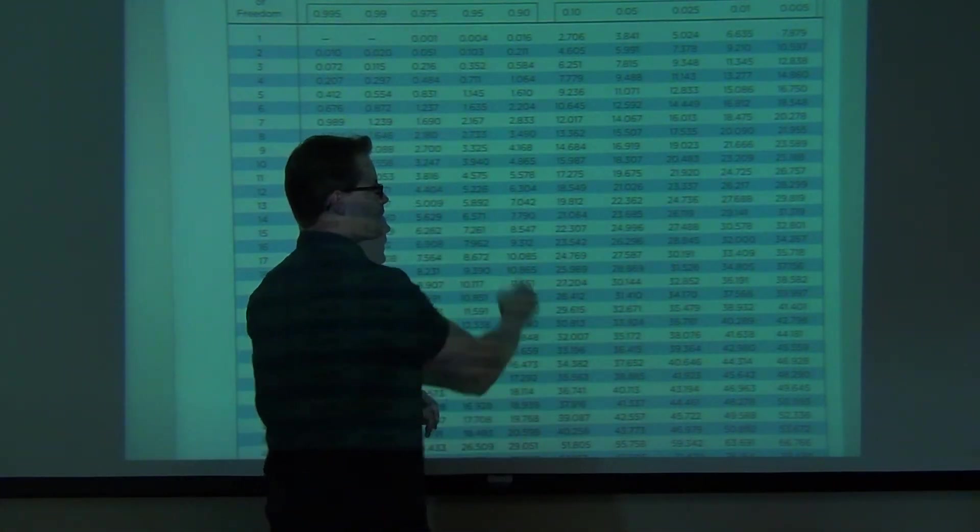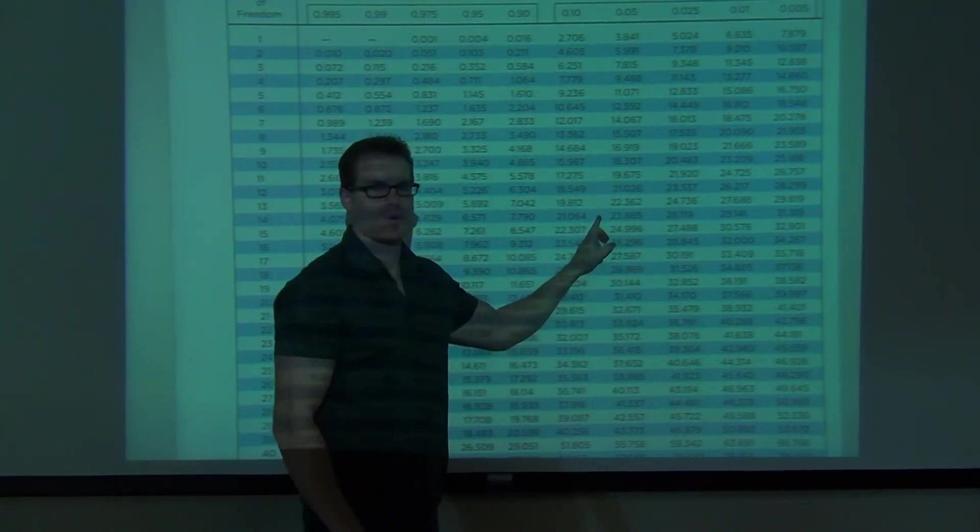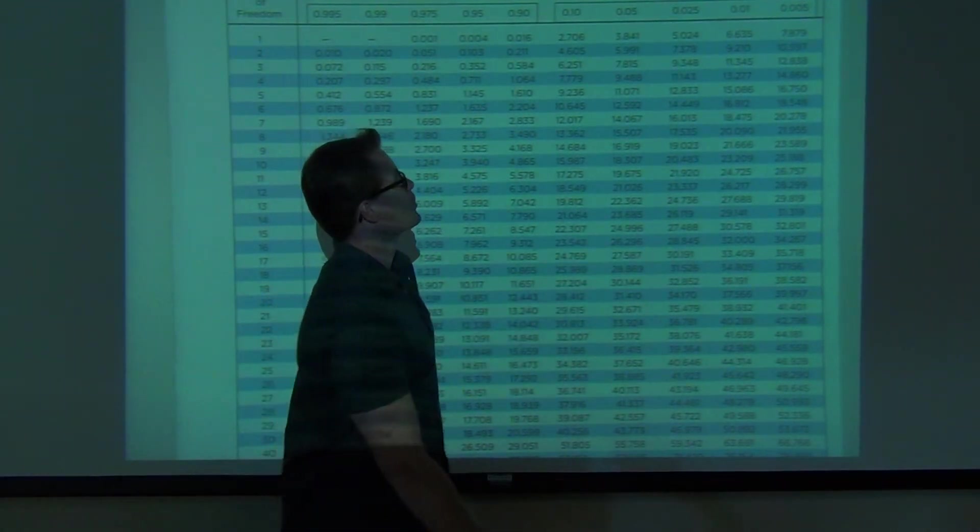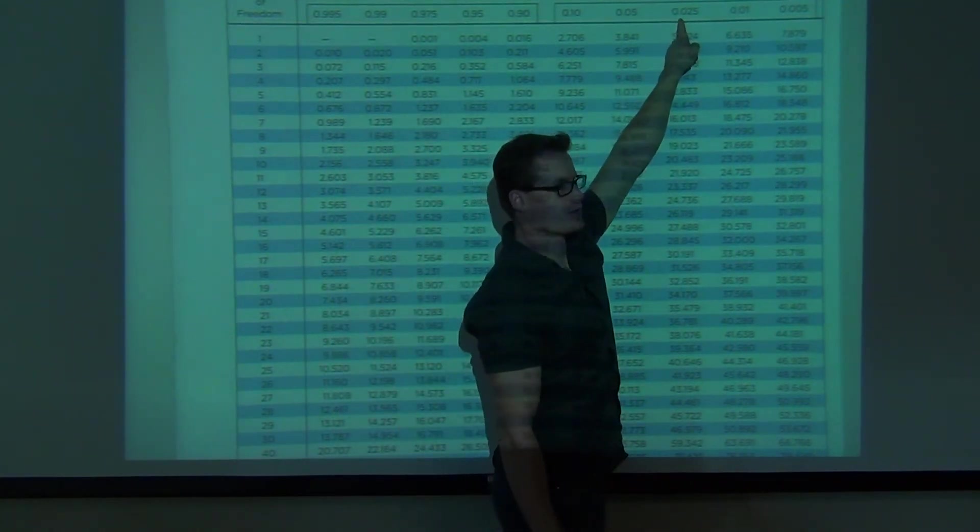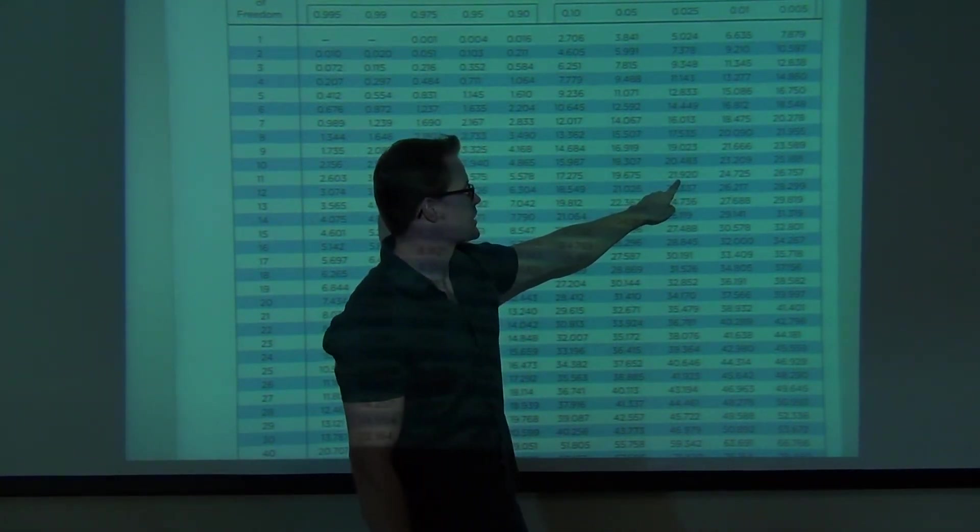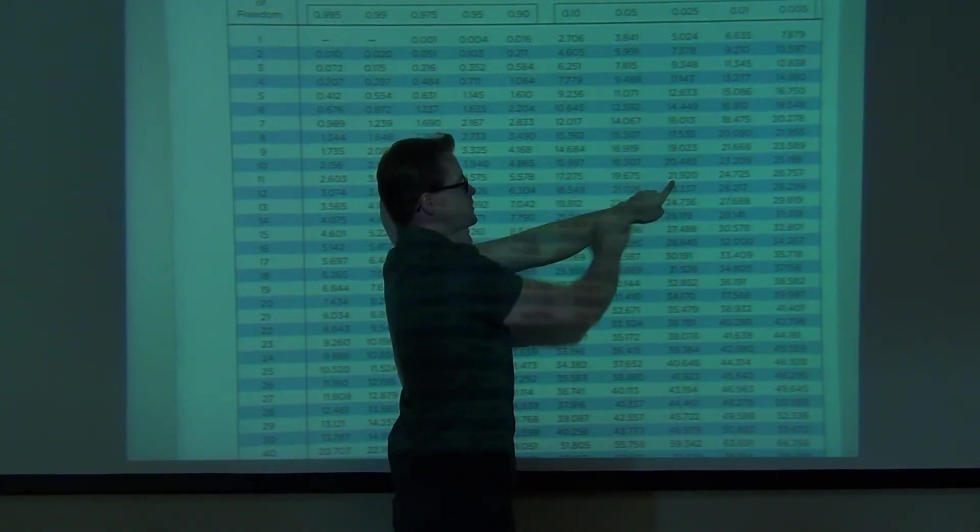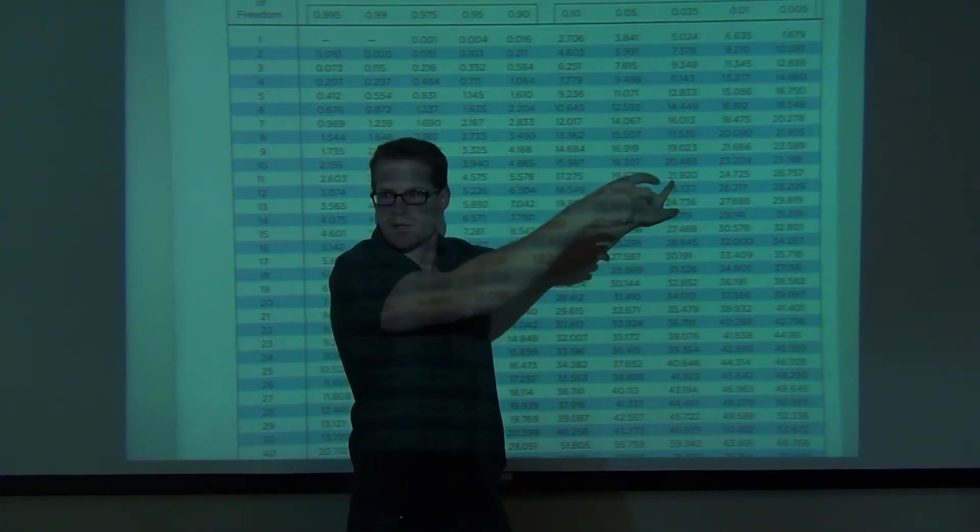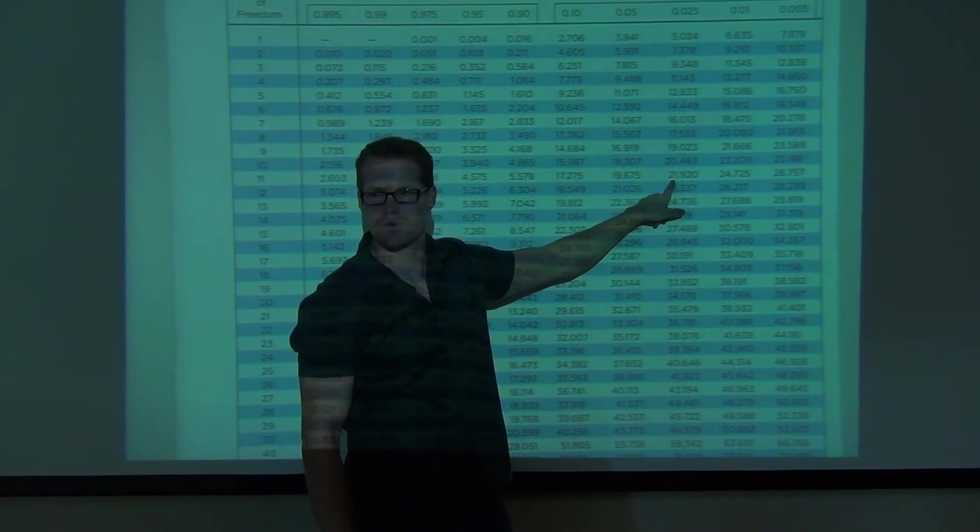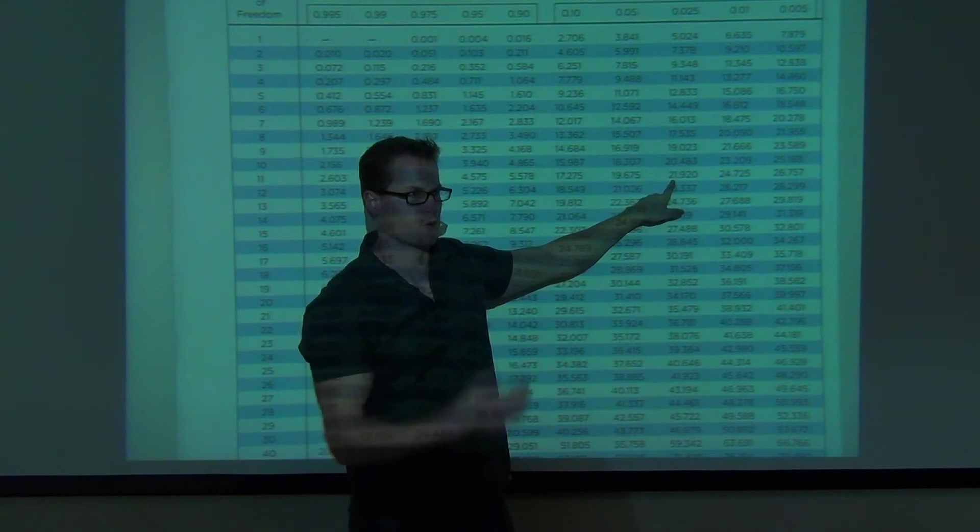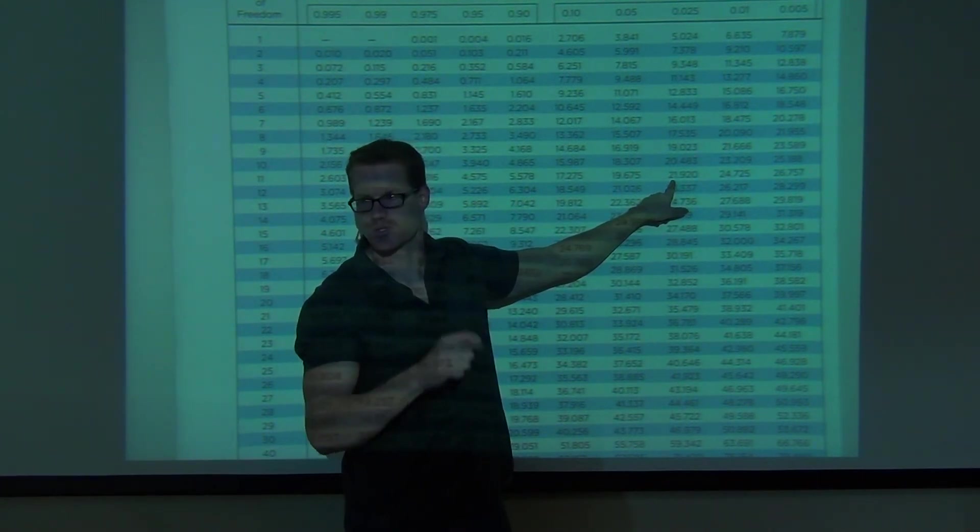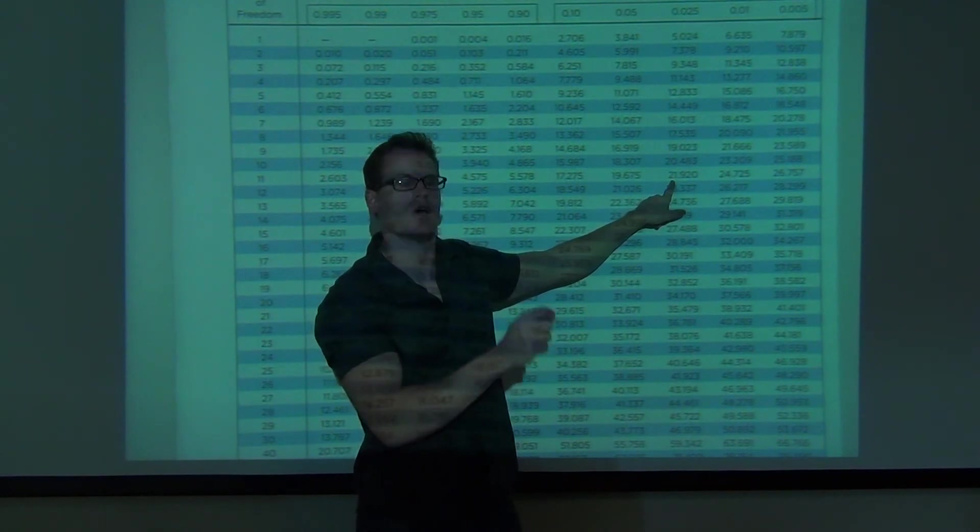The table I had you draw had an area to the right. That area was 0.025. Look at your table that you drew. So we're going to go over here to the area to the right, 0.025. It's on the chart. We're going to follow that down to our degrees of freedom, 11. And you're going to get 21.92. Did you find 21.92 as well? So write down 21.92 as your marker for your right critical value on your chi-square distribution. That's what it is. It's a right chi-square distribution critical value.